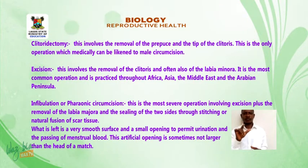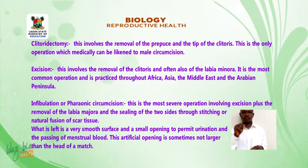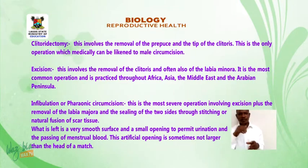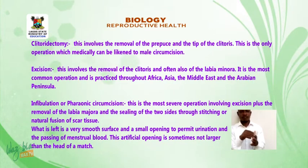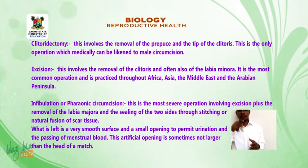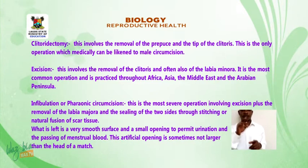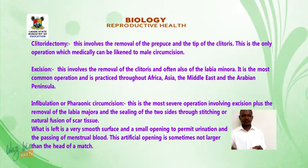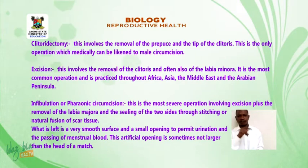Type two, excision, involves the removal of the clitoris and often also of the labia minora. It is the most common operation and is practiced throughout Africa, Asia, the Middle East, and the Arabian Peninsula. Type three, infibulation or pharaonic circumcision, is the most severe operation, involving excision plus the removal of the labia.